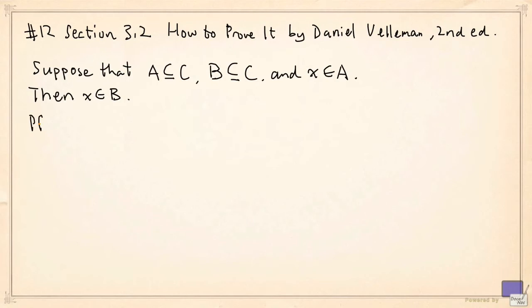Here is how the proof goes. It is a proof by contradiction. So we are assuming the negation of the conclusion, which means we are supposing that x is not in B, and we'll try to derive a contradiction.